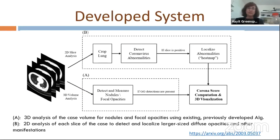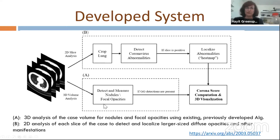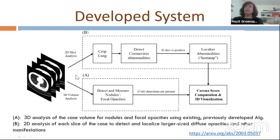The basic system solution is comprised of two paths. There's a 3D path in which we use a nodule detector that has been working for several years and is quite robust. We saw that it could handle the small, very small focal ground glass opacities. Then, in order to detect the larger opacities, we had to build an additional network from scratch, and for that we decided to go for 2D analysis.